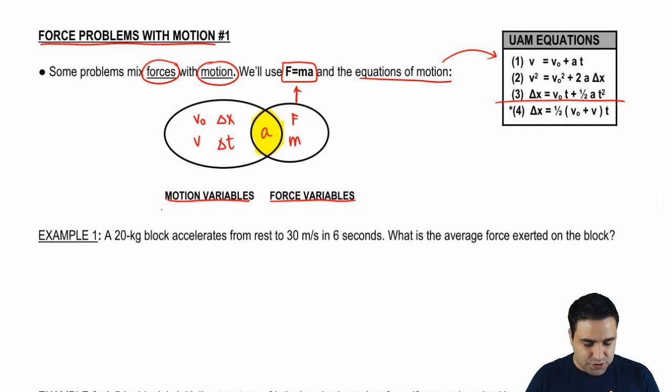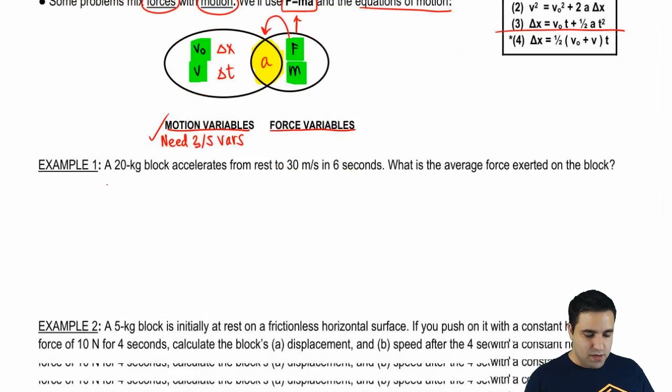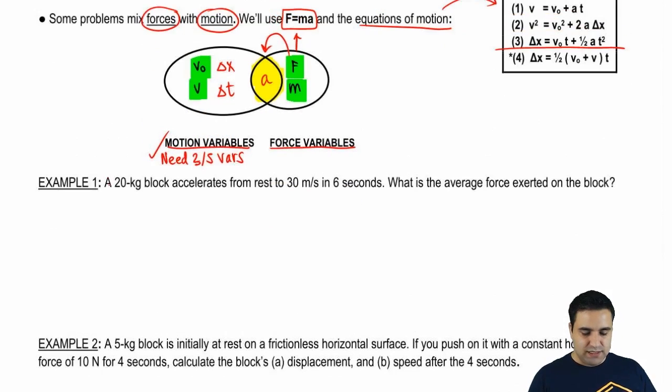In motion problems, you're going to need three out of five variables to be able to solve a problem. But now instead, what a question might do is give you these two, not give you a third, but then give you these two. So by giving you F and m, you're going to be able to find A, which means you're now going to have three out of five here. So you just have to jump around from one to the other. It's pretty straightforward, let's do some examples here.